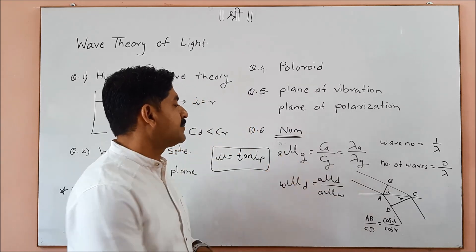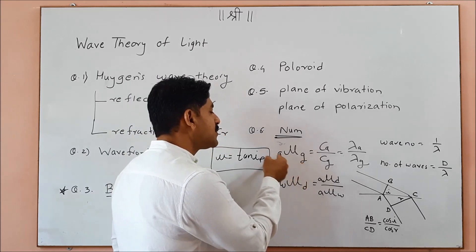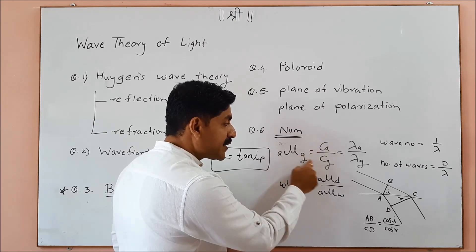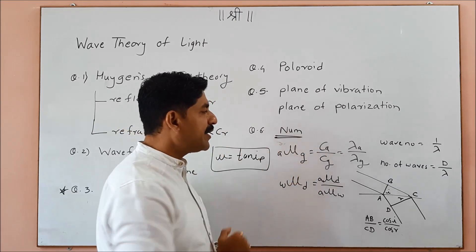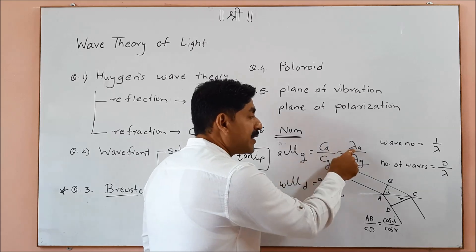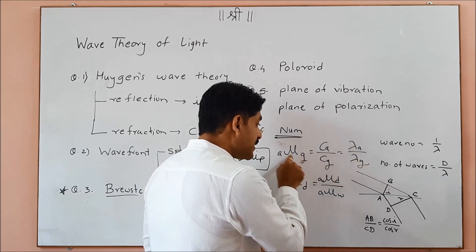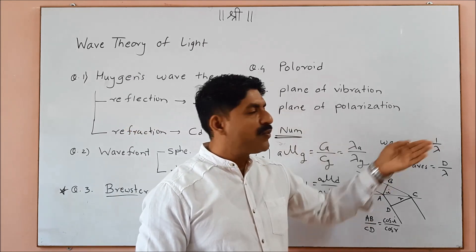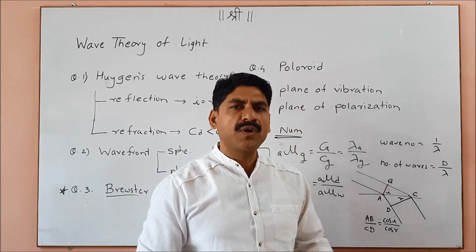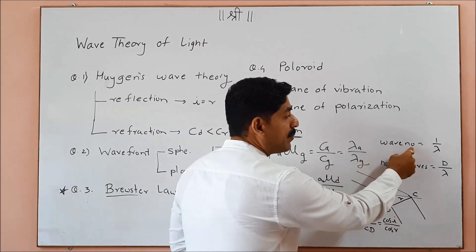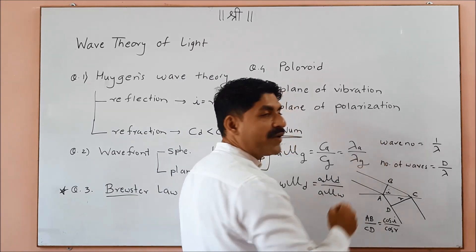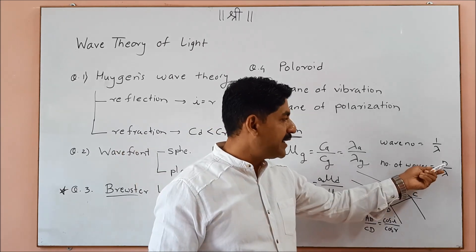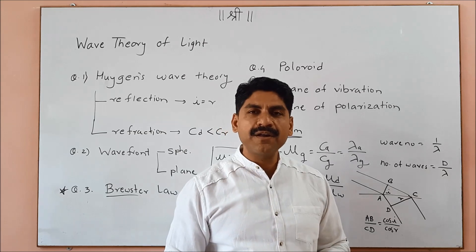Here is a formula: refractive index of glass with respect to air is the ratio of velocity in air to velocity in glass. It is also the ratio of wavelength in different media. Wave number is 1/λ — it is the number of waves in a particular distance.